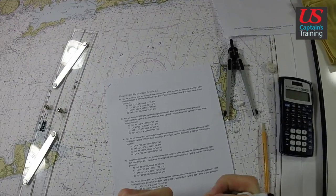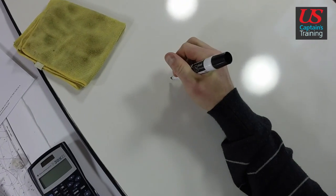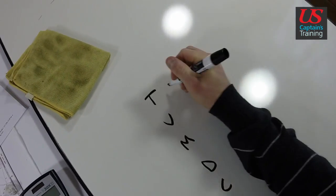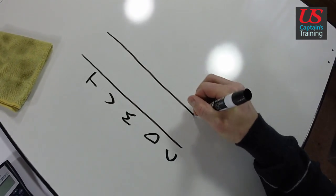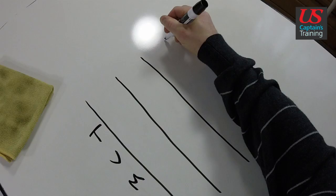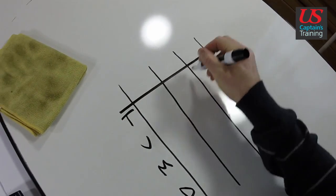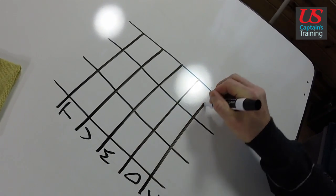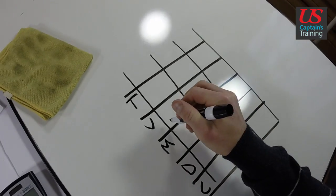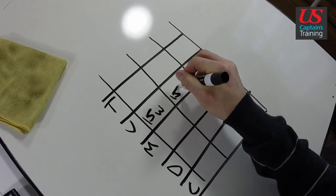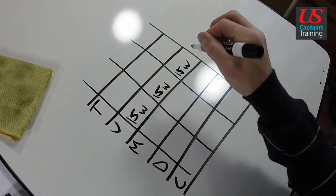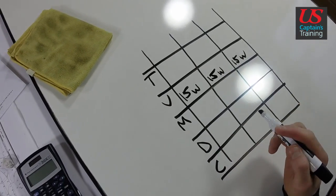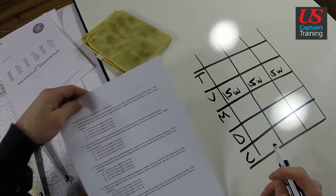Let's take these three bearings up to true. We're going to set them up with TVMDC. I'm going to make a table to keep all this organized. We'll do it for all three, same way we do them in practice problems two and three. We know variation is 15 west on this Block Island chart. Now we need deviation.